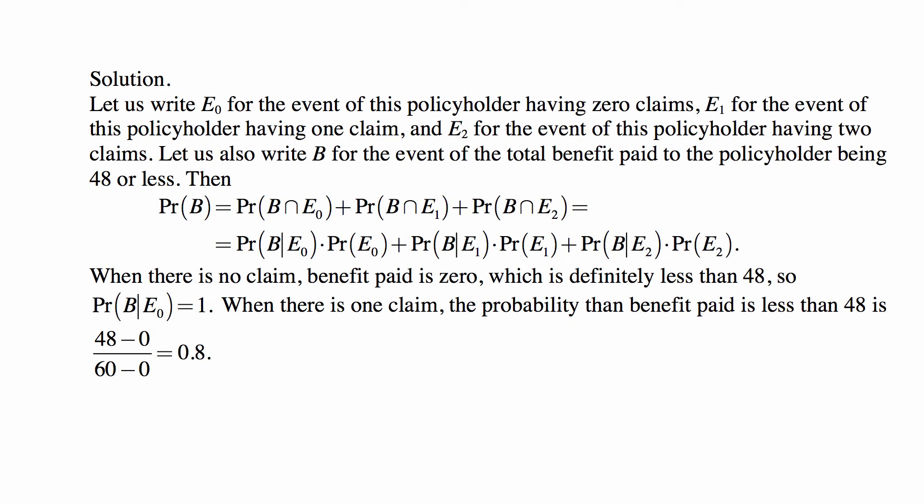So let us write E0 for the event of this policyholder having zero claims, E1 for the event of this policyholder having one claim, and E2 for the event of this policyholder having two claims. Let us also write B for the event of the total benefit paid to the policyholder being 48 or less. Then the probability that the benefit is 48 or less is the probability that it's so when E0 happens, plus the probability that it's so when E1 happens, plus E2. It's basically the sum of probabilities of three intersections, which we then write out as conditional probabilities times the probabilities of E0, E1, and E2.